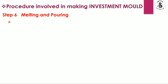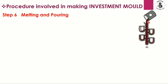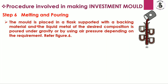In step number six, melting and pouring, the mold is once again inverted and the molten metal is poured through the gating system into the mold cavity, which represents the required shape and size of the component. The mold is placed in a flask supported with backing material, and liquid metal of the desired composition is poured under gravity or using air pressure, depending on the requirements. For complex geometries, air pressure is used; otherwise, the metal is poured directly.